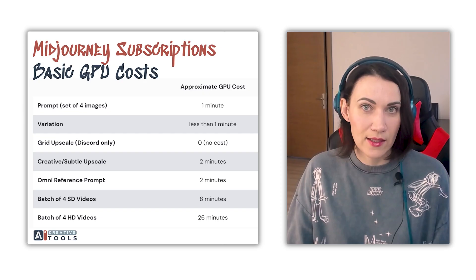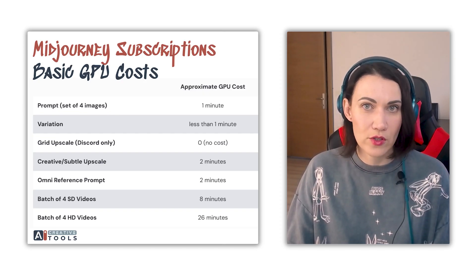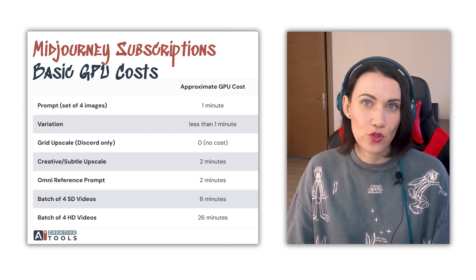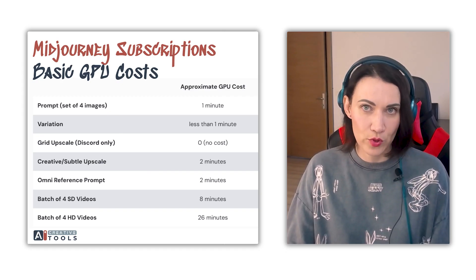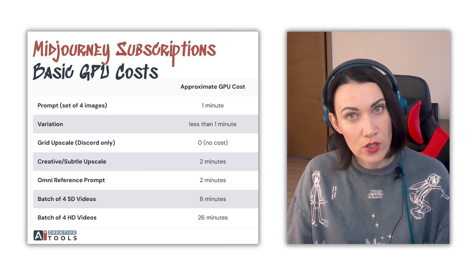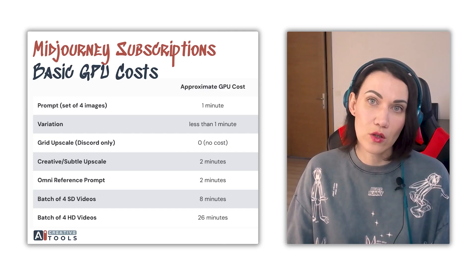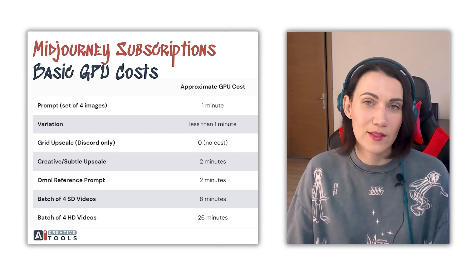For example, upscaling images, using Omni reference, non-standard aspect ratios, or older model versions take more GPU time. Creating variations or using lower quality settings usually takes less.